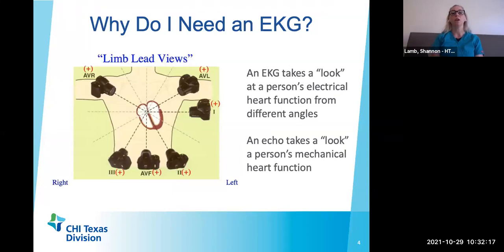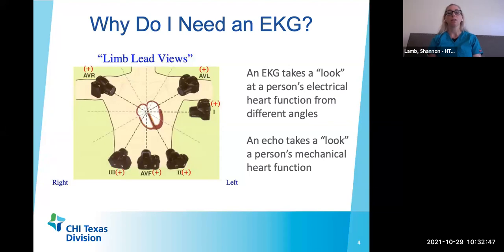So why might someone need an EKG? An EKG takes a look at that person's electrical heart function from different angles based on the different leads. This assists us with understanding how the electrical conduction is working. We know that electrical conduction is what helps the mechanical aspect — the actual pumping of the heart — to function. If our electronics are in good working order, then our actual functionality and movement will be in good working order. We like to have people be in sinus rhythm because that is the best way to get the most cardiac output and the best squeeze out of the muscle. If we wanted to look at the movement of the chambers of the heart, we would get an echocardiogram, which is just an ultrasound that looks at the movement of the muscle itself.